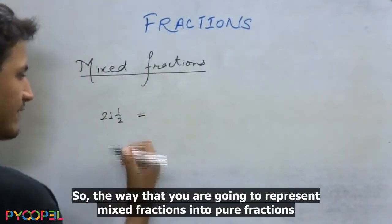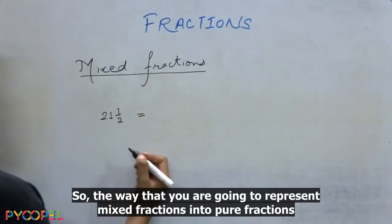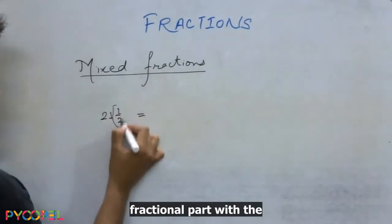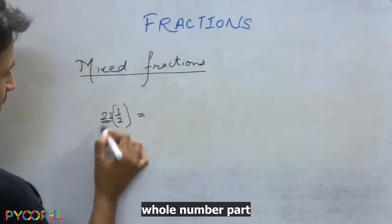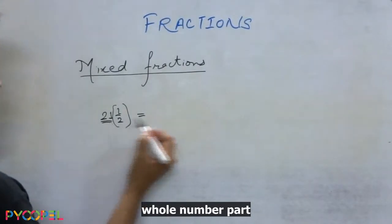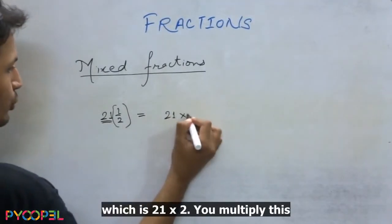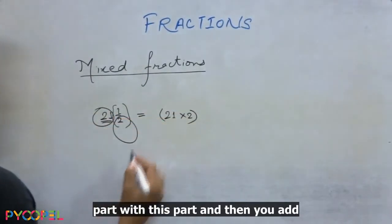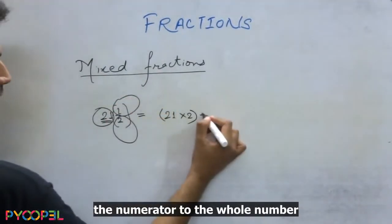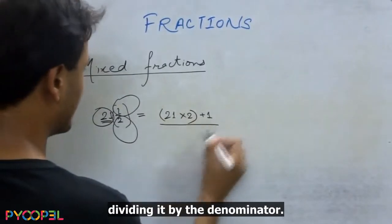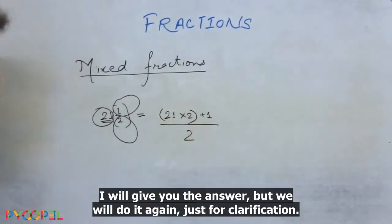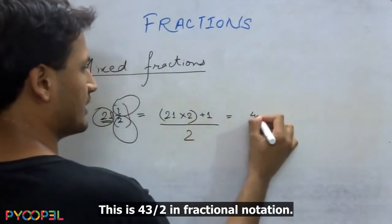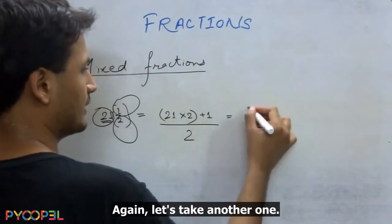So the way that you're going to represent mixed fractions into pure fractions is, you'll multiply the denominator of the fractional part with the whole number part, which is 21 into 2. You multiply this part with this part and you add the numerator to the whole number, dividing it by the denominator. I'll give it to you the answer, but we'll do it again just for clarity sake. This is 43 by 2 in fractional notation.